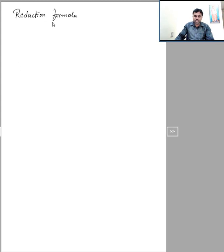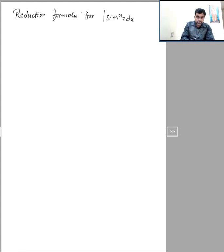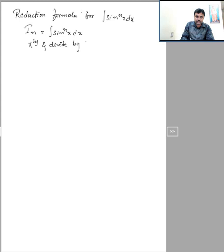So let us see the reduction formula for the integral of sin power n x dx. I will define the given problem as I_n equal to integral of sin power n x dx. To find the reduction formula, I am going to multiply and divide by sin x.